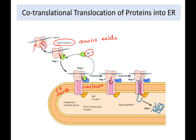Then SRP is released and the ribosome binds to the membrane translocation complex known as the translocon. SRP binds to the SRP receptor, which is bound to the translocon. The translocon opens and the protein starts going into the ER lumen. The signal sequence is cleaved by signal peptidase — the red part of the protein is cleaved — and the protein is released into the ER lumen. This is how a protein belonging to the endomembrane system gets from ribosomes in the cytosol to the ER lumen.